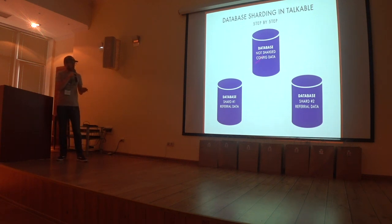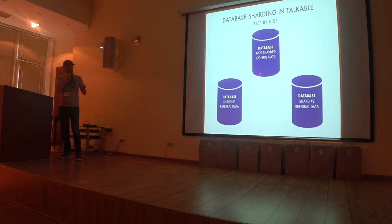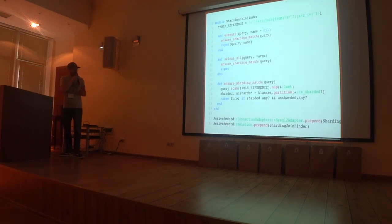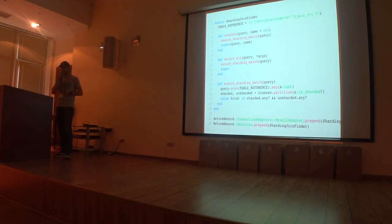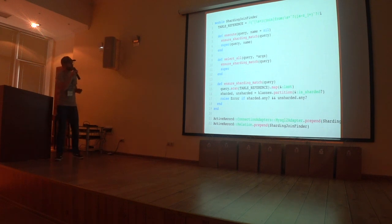When we made that decision, we came up with another problem. Previously everything was in one database, and many queries joined tables across what are now different instances. You can't do that anymore when tables are in different databases, so you have to get rid of all joins that existed in your application. We came up with a straightforward idea: we parse all queries in the application, and if any query references tables from both sharded and unsharded databases, we raise an error and rewrite the code — a joint detector.